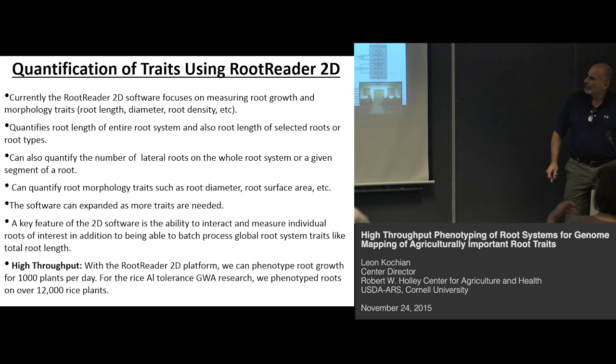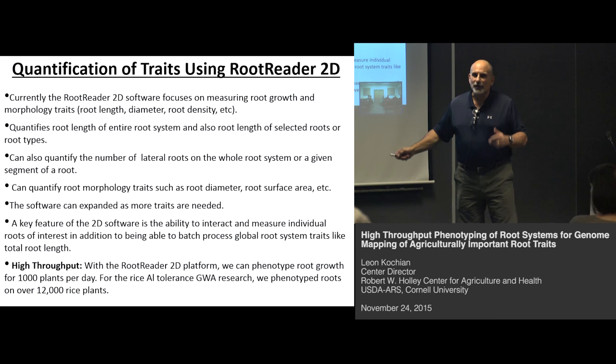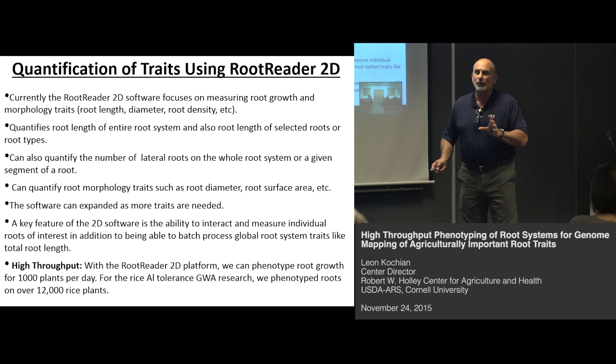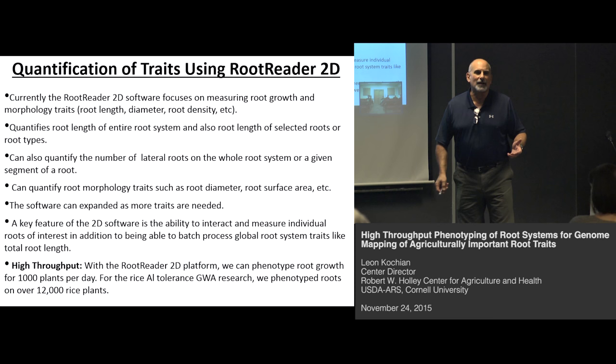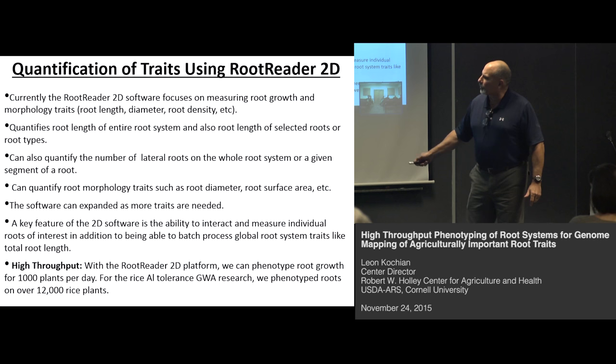Root Reader 2D focuses on root growth traits and some root morphology traits. We can quantify root growth of the whole system, or with a user interface you can measure root growth on selected root types. It automatically acquires things like root diameter and root density, and we can add other traits like root angle. The throughput is really nice — 1,000 plants a day is a lot of work but very doable.